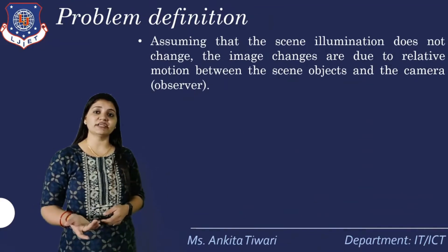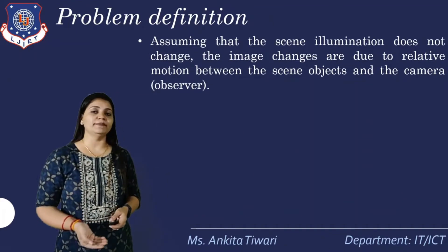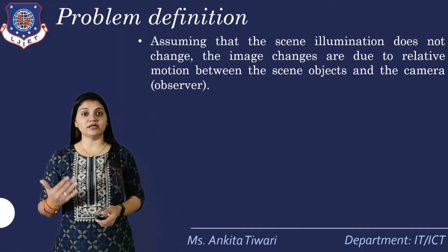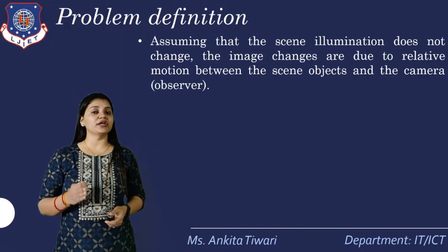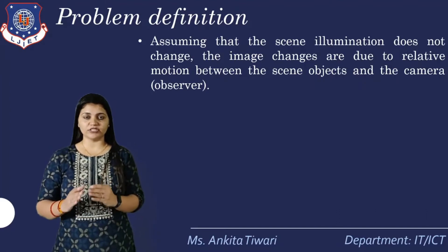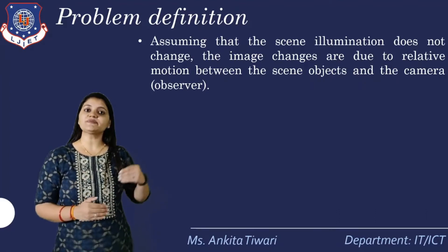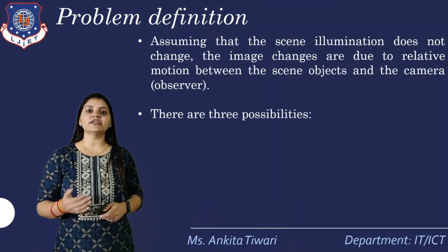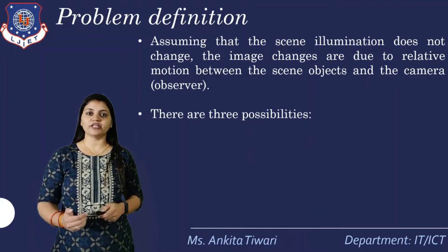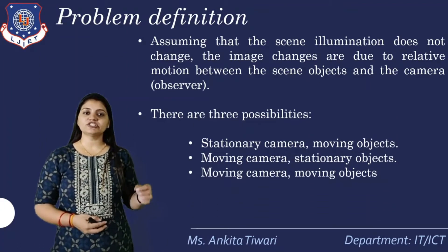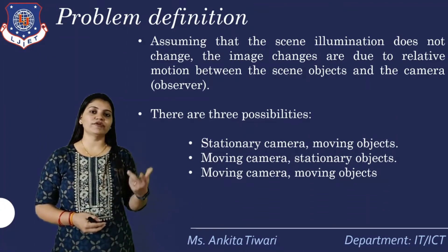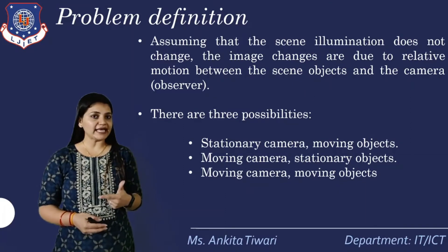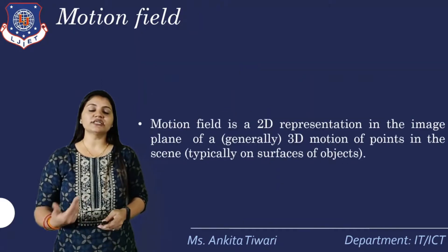The problem definition for the motion field: assuming that the scene illumination does not change, image changes are due to relative motion between the scene objects. The scene is there, the object is there, with respect to the scene the object moves, and the camera observes that. There are three possibilities: first, stationary camera with moving object; second, moving camera with stationary object; and third, moving camera with moving object.